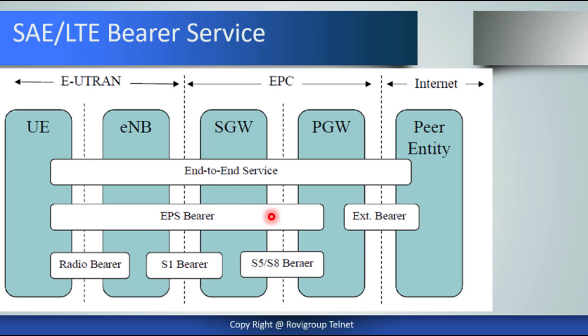An EPS bearer carries traffic between the UE and PDN gateway using an Enhanced Radio Access Bearer (ERAB) between the UE and serving gateway, and an S5-S8 bearer between the serving gateway and PDN gateway. There are two types of EPS bearers in LTE. The default bearer is assigned when the UE connects to the LTE network and receives an IP address. This bearer has no defined quality of service and is maintained until the UE is switched off or goes out of LTE coverage.